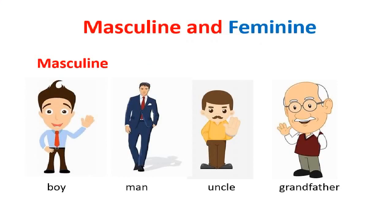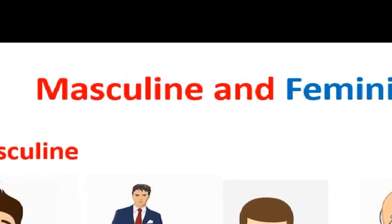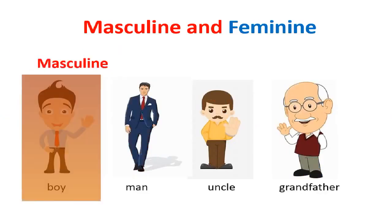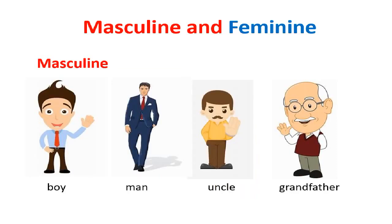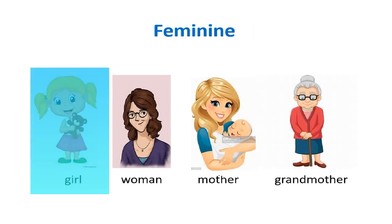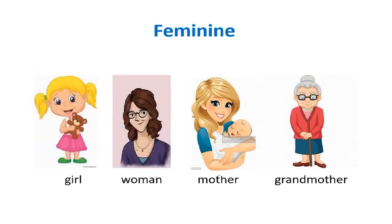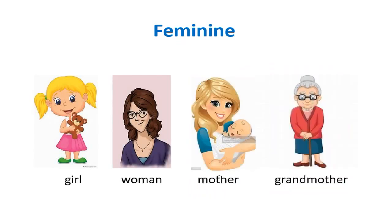Now let's have a look at some more examples of masculine and feminine. Masculine can be a boy, a man, an uncle, and a grandfather. Some examples of feminine: feminine can be a girl, a woman, a mother, and a grandmother. These are the examples of feminine.